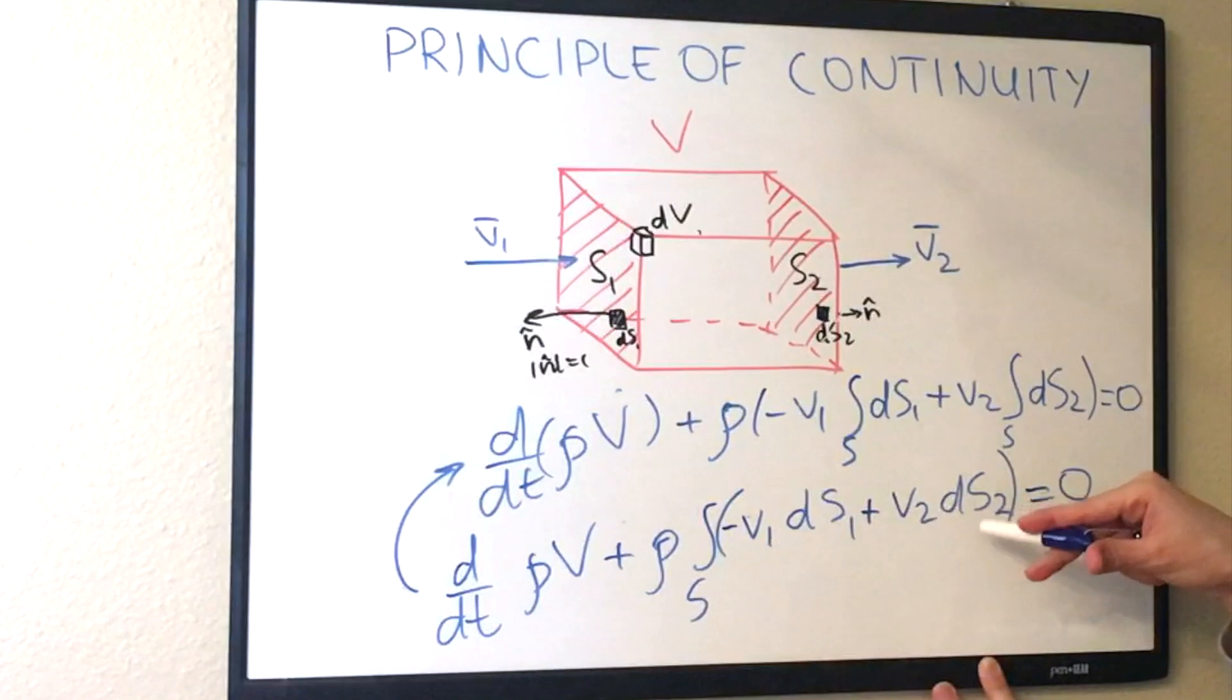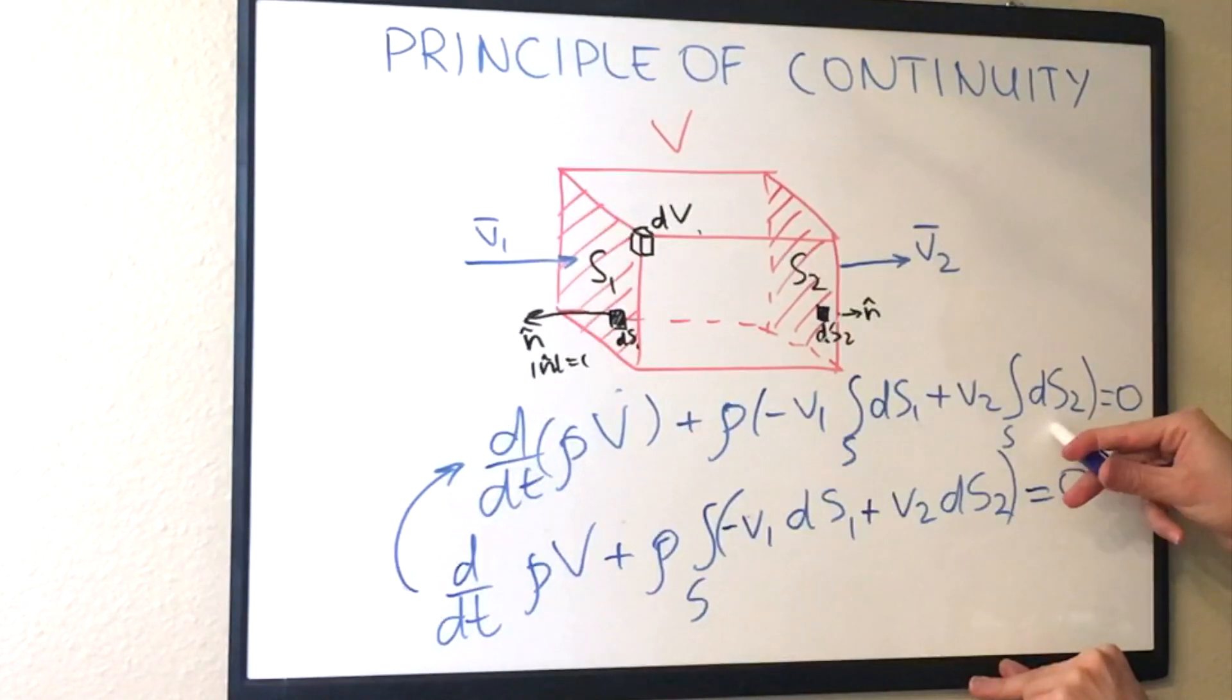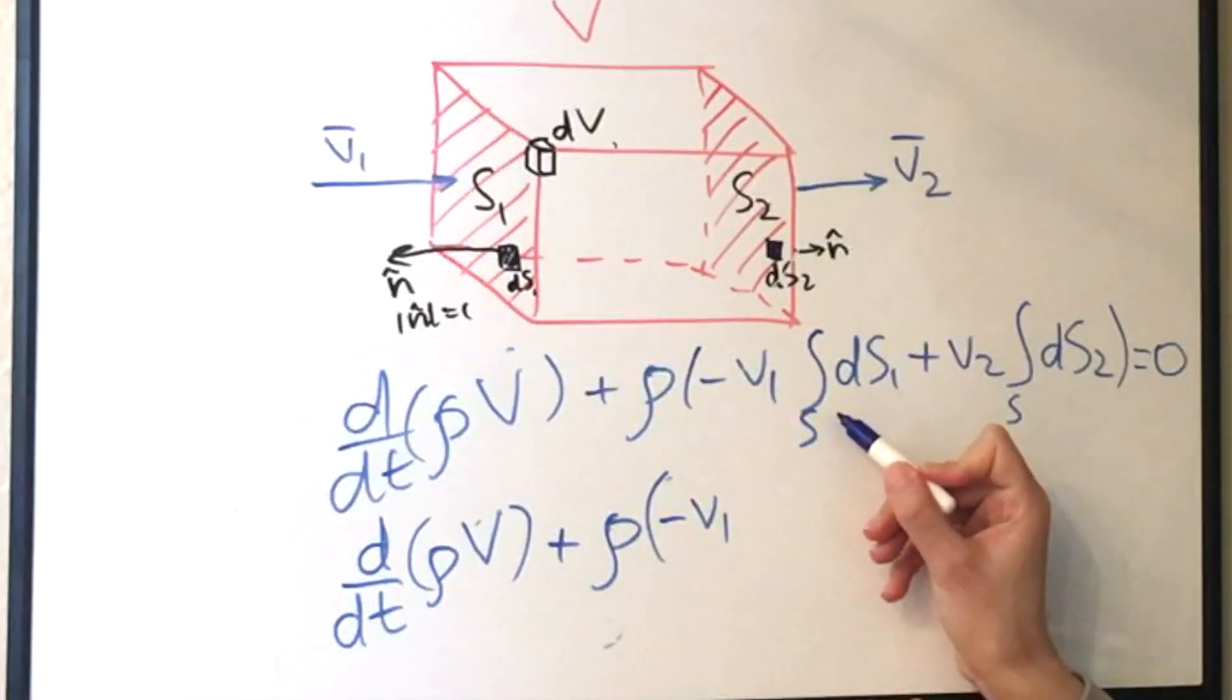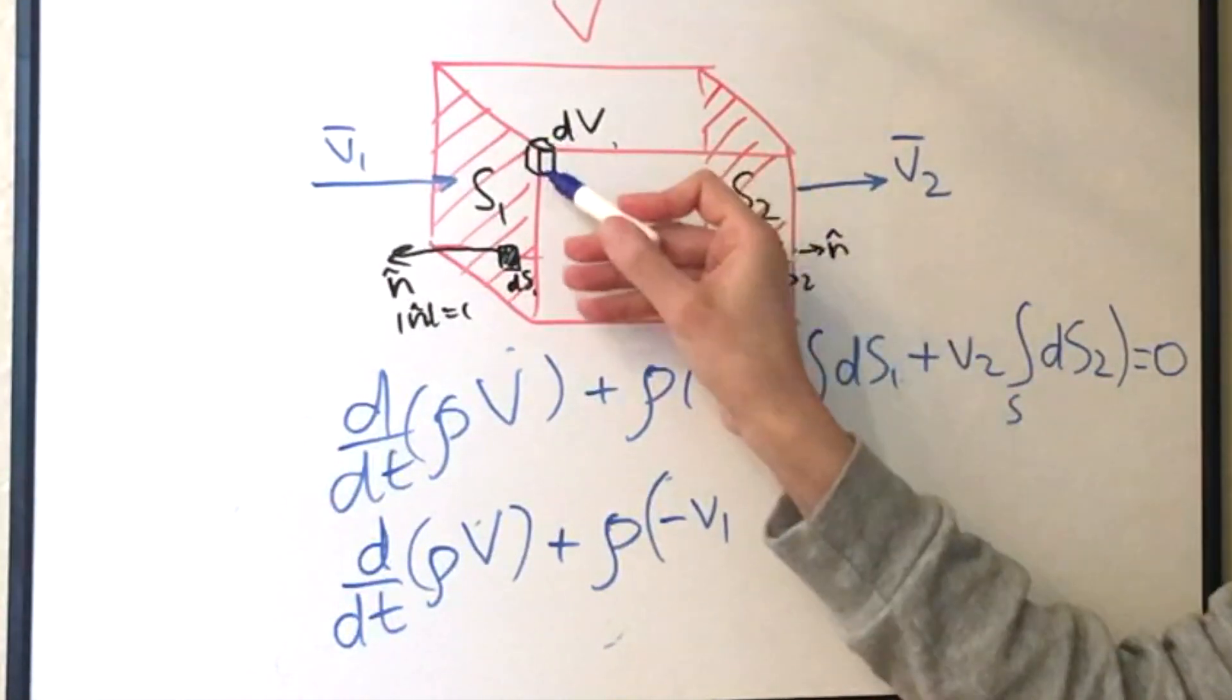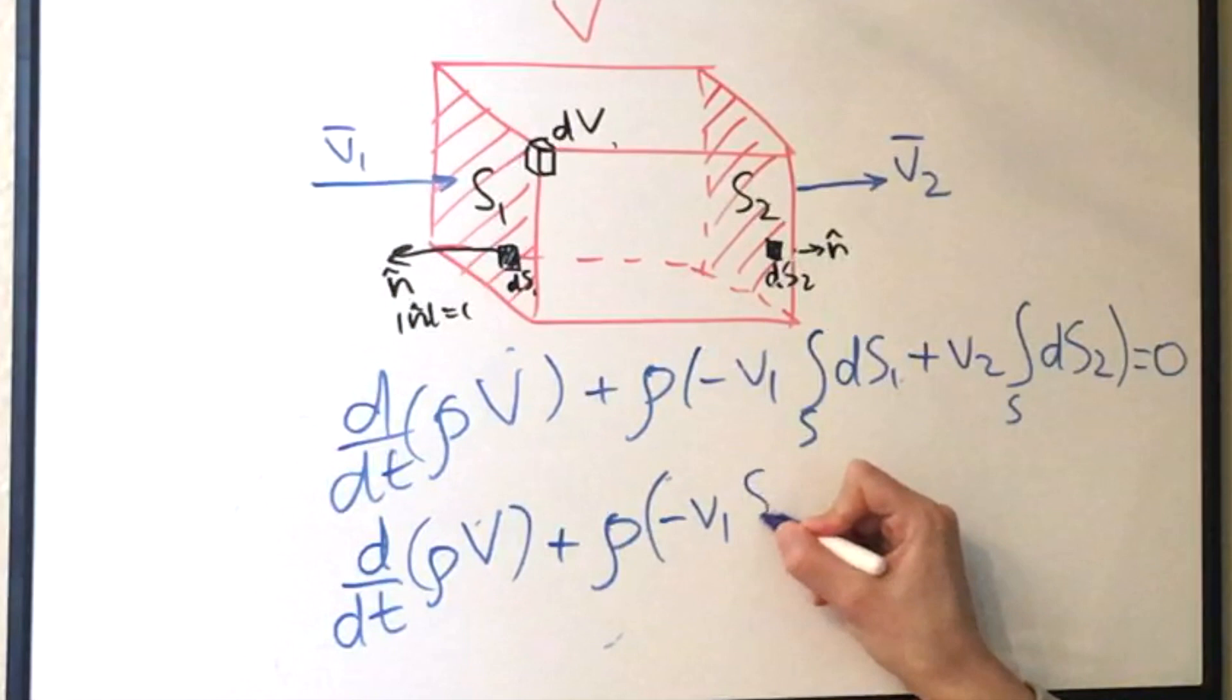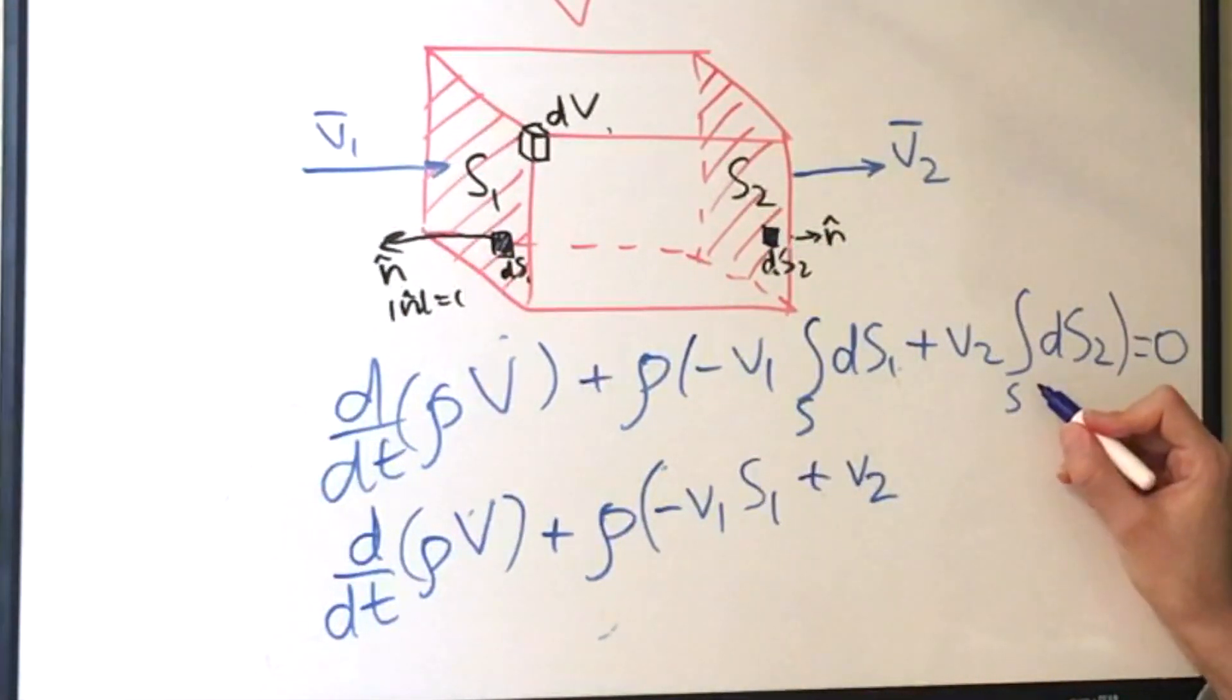So if we have an integral of the sum, that will be a sum of two integrals. Now let's simplify this even more. So the integral over small parts of ds1 will just give us the whole surface of s1 or the area. And then we do the same with this side. The integral of a control surface of little parts of ds2 will just give us the surface of s2.